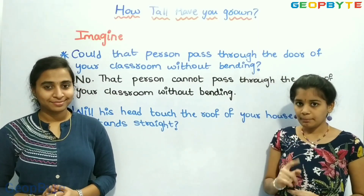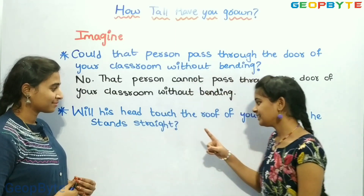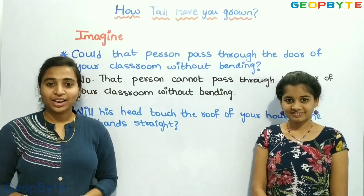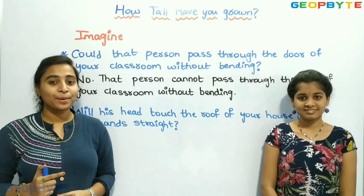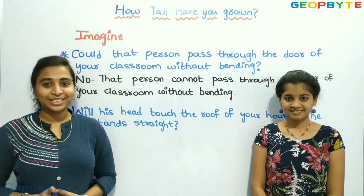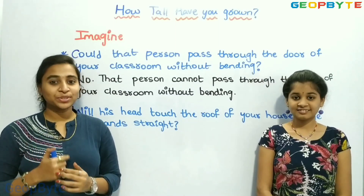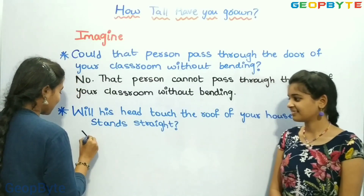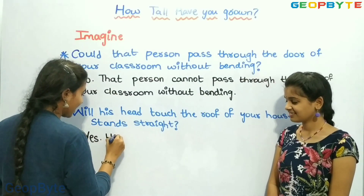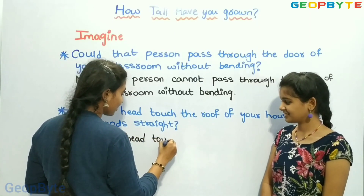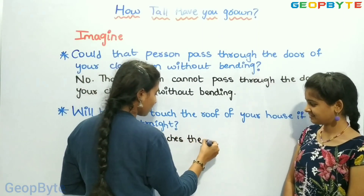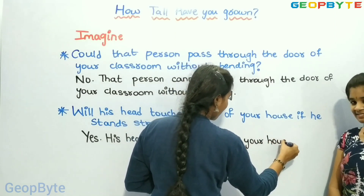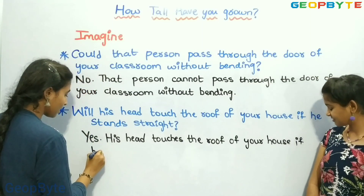Children, now imagine — will his head touch the roof of your house if he stands straight? Yes, children, our house's roof height will be about 270 or 260 centimetres, but this person is about 272 centimetres tall. So his head will touch the roof of your house if he stands straight.